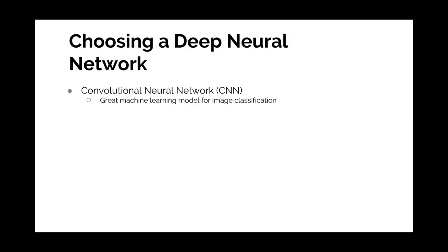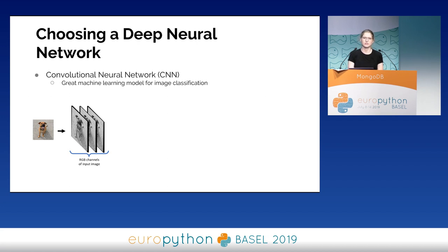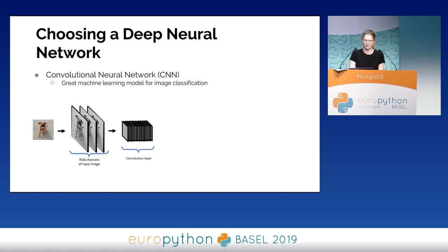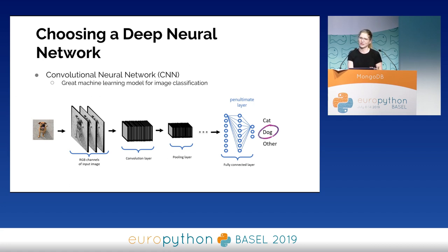Specifically within deep learning today we're going to use a convolutional neural network, which is popular for image classification. It works by preserving the RGB channels in the first layer — taking each pixel's red, green, and blue values. Then we use a technique to filter the images and extract the most important information in the convolution layer. Next is pooling, where we aggregate and reduce data, saving compute power. Finally we get our prediction for whether the animal is a dog, cat, or something else.